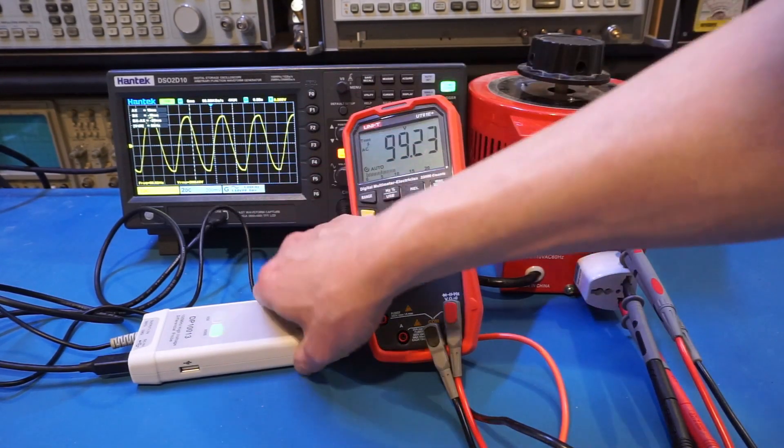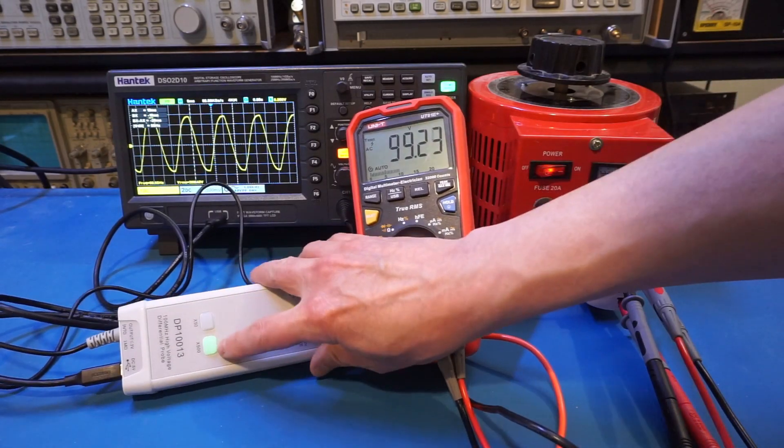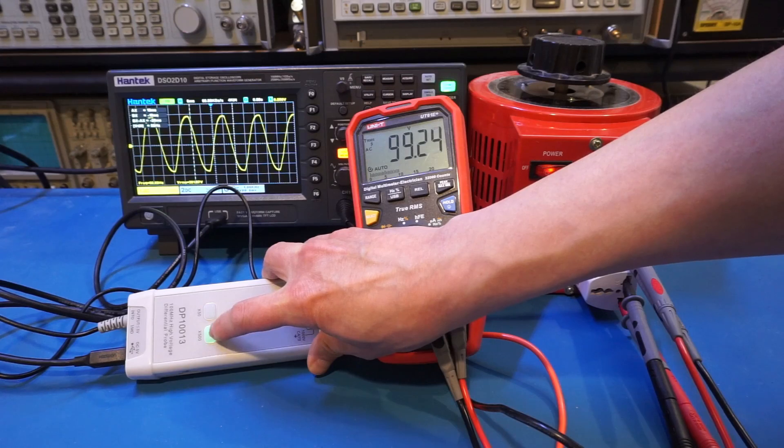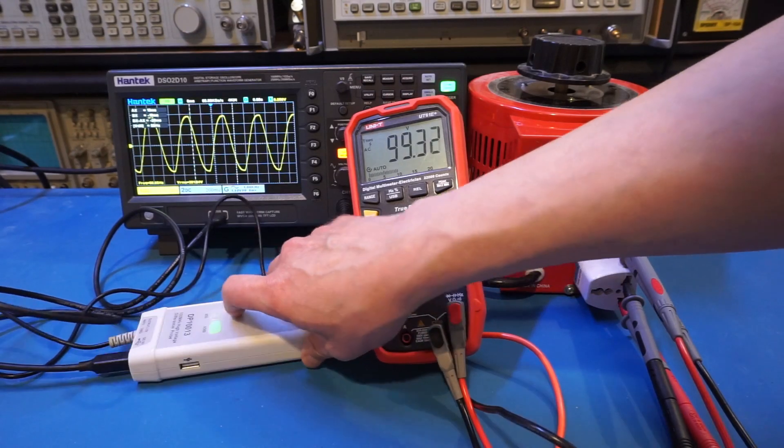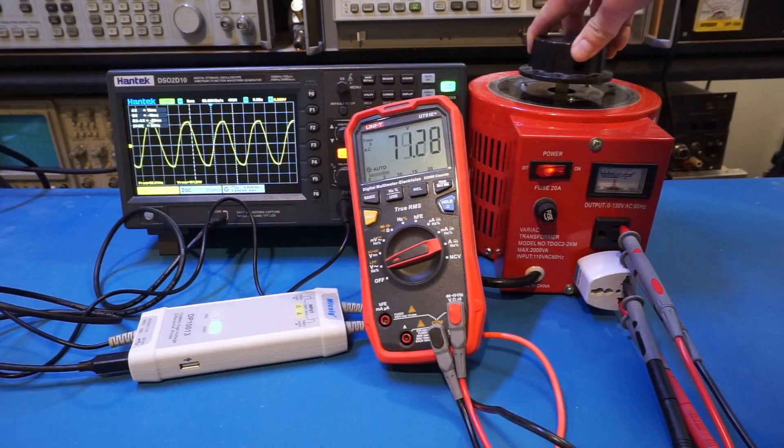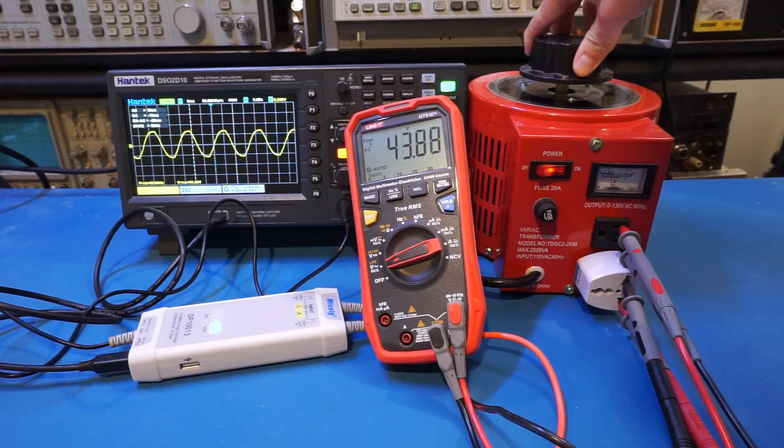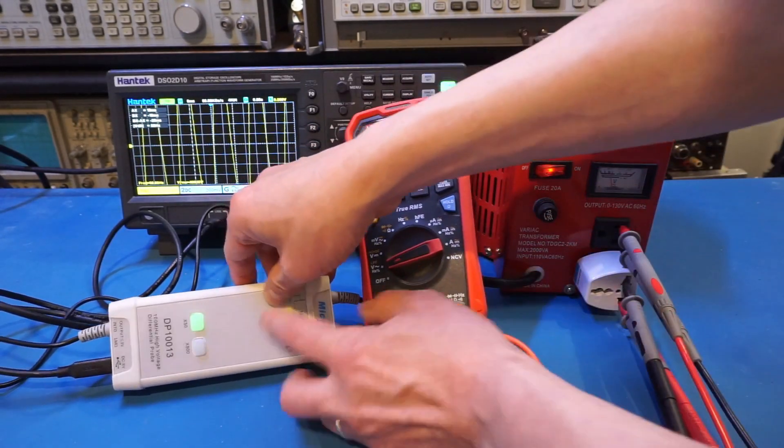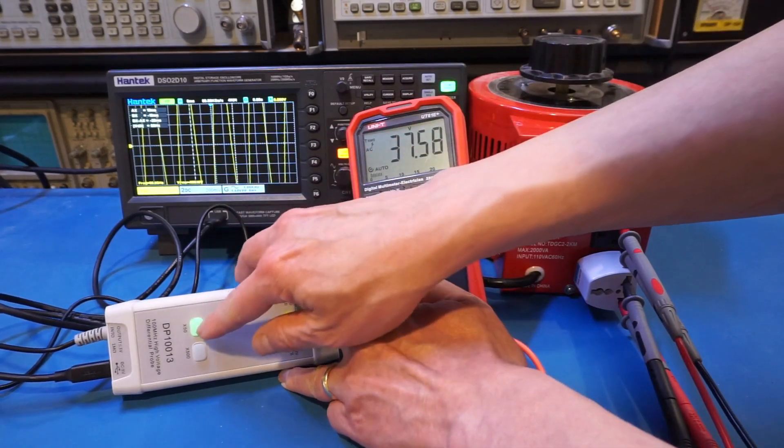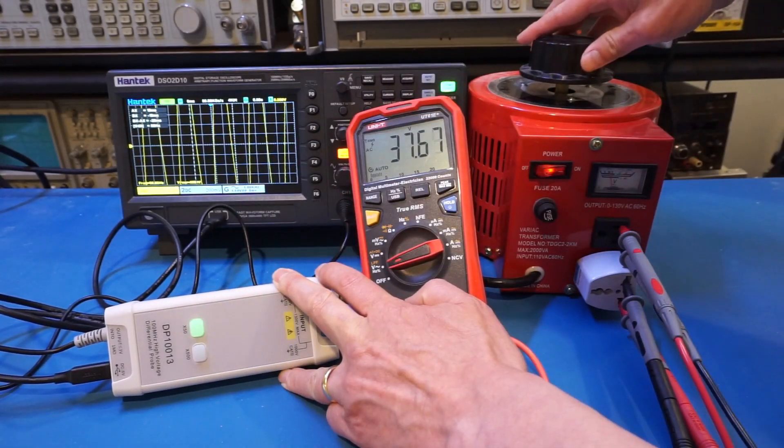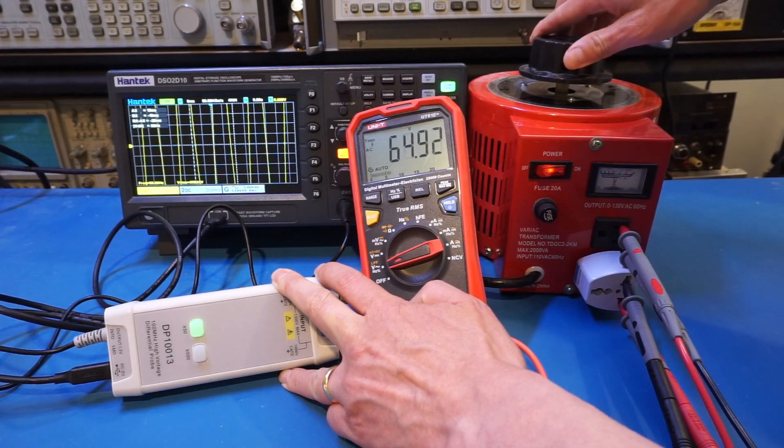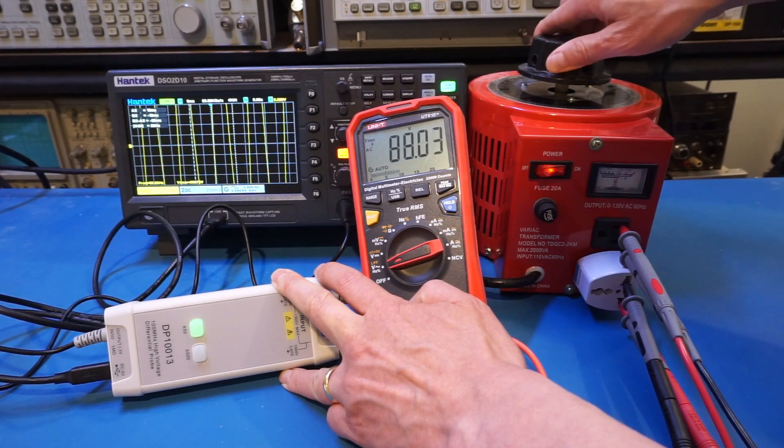This differential probe also has a feature where you can see that this light right now is green, it's indicating we're in this times 500 setting. And if I lower the voltage, I'll show you that we can change it to times 50. And what happens is if the voltage is above the range, it will start to flash, indicating that you need to dial down the voltage, otherwise the probe might be damaged.